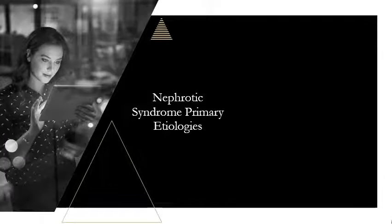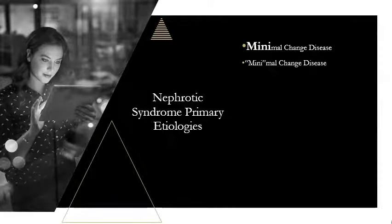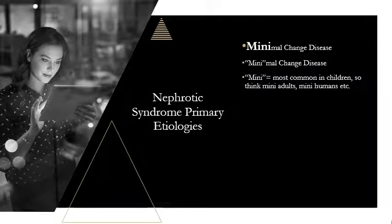Now breaking down specific syndromes related to nephrotic syndrome — the primary etiologies. The first one I remember is minimal change disease. When I think of minimal change disease, I see 'mini' — mini adults, mini humans. Just remember minimal change disease is most common in children. In a vignette, it's almost always going to be a child, not an adult.